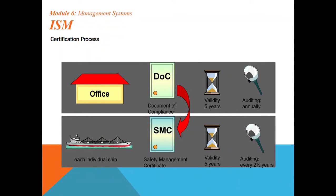To give you a quick idea of how it works: from the office, the Document of Compliance has a validity, and the auditing interval — for the vessel, there should be a Safety Management Certificate valid for five years, with an auditing interval of 2.5, or two and a half, years.